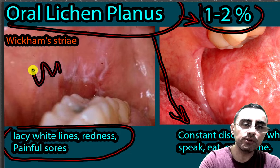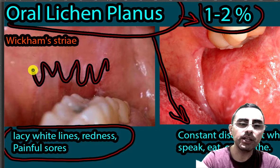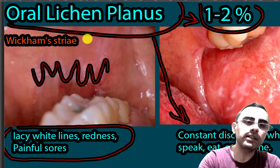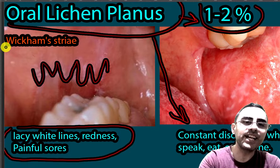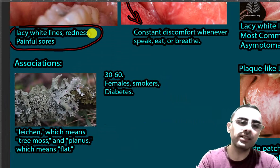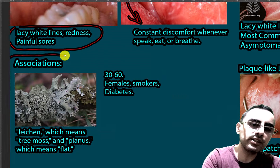You can see the lacy appearance of these white lines in the oral mucosa. This is called Wickham's striae. Now let's talk about associations.